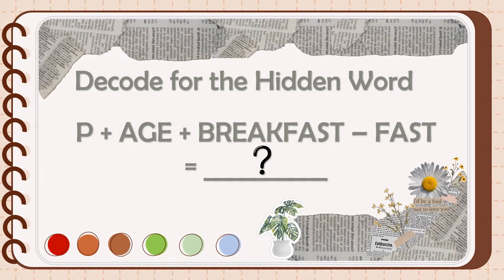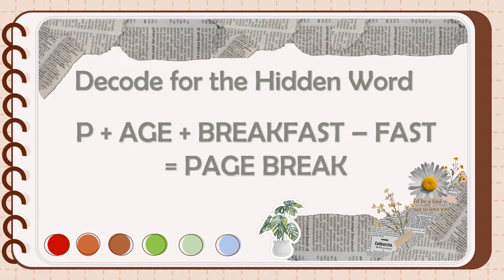Decode for the hidden word: P plus age plus breakfast minus fast equals blank. The answer is page break.